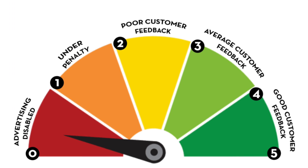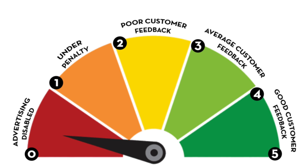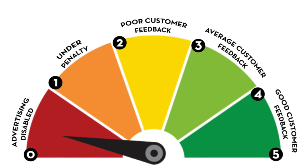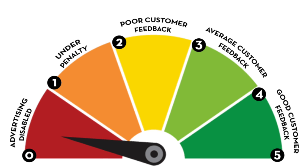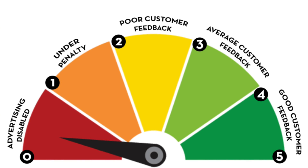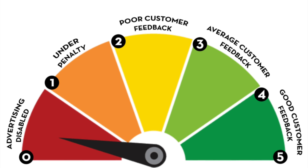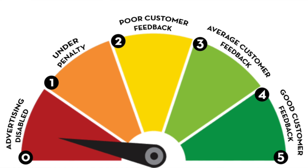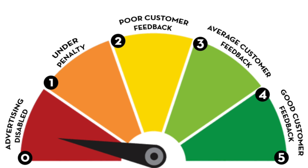Scores from two to three means you have poor customer feedback — your business is close to receiving a delivery penalty, meaning ads will cost more and reach fewer people. Scores from three to four means average customer feedback, on par with other e-commerce businesses. Scores from four to five means good customer feedback — the majority of customers surveyed gave positive feedback about their purchase experience. Note that on pages less than a year old, if your score drops to two, it won't be able to advertise.